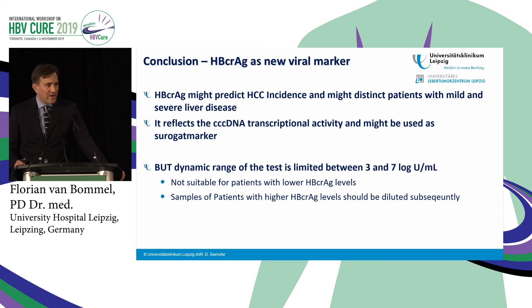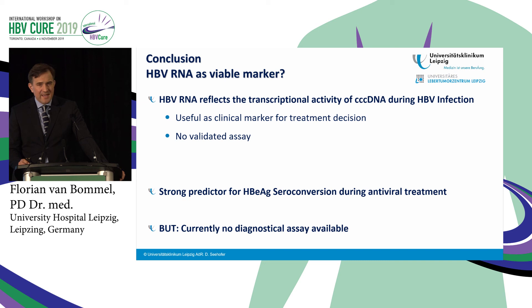In conclusion: core-related antigen as a new viral marker may predict HCC incidence and distinguish patients with mild and severe liver disease — it reflects CCC DNA transcriptional activity and may be used as a surrogate marker, but the dynamic range is low. HBV RNA also reflects CCC DNA activity, though may be less reliable in E-antigen-negative patients. It can be a useful marker for treatment decisions and is a strong predictor for E antigen seroconversion, but no diagnostic assay is currently commercially available. Thank you very much for your attention.